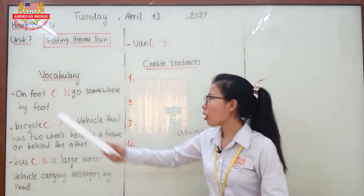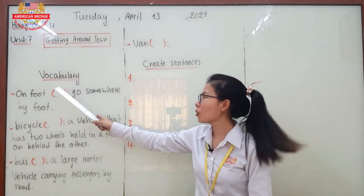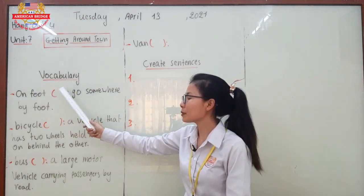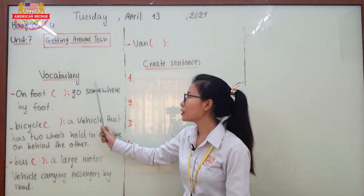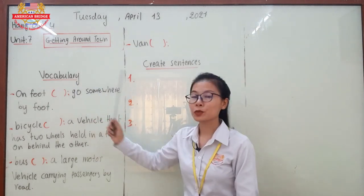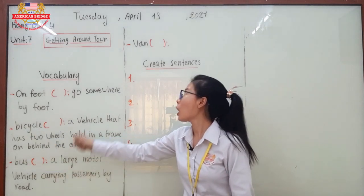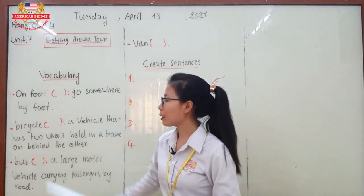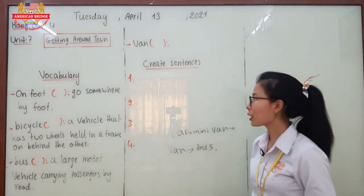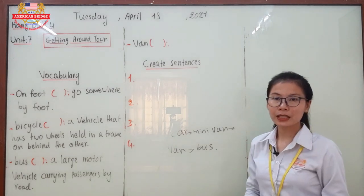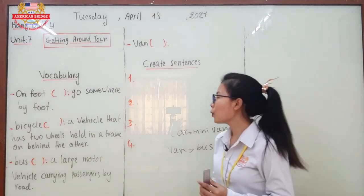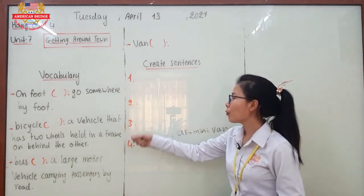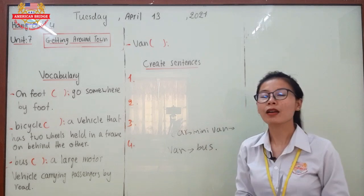For 'on foot,' 'go' is a verb, so the part of speech should be a verb. For the bus and other vehicles, we use nouns. I hope you can identify the part of speech for each word. Now let's create sentences — bring all the vocabulary words together to create sentences. You have four words, so create ten sentences. That is enough.